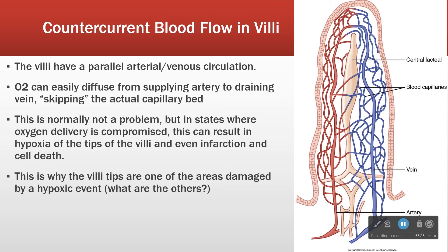Whether you had a drowning, an MI, a heroin overdose and stopped breathing — whatever the cause of your reduction in oxygen — one of the places that's going to be damaged is your intestinal villi. This is so common that it is incredibly frequent in ICUs to have patients with significant GI disturbance as they're recovering from whatever put them there, because the villi die off.